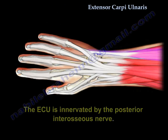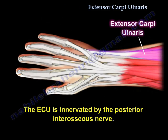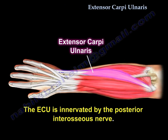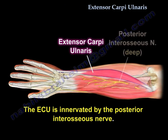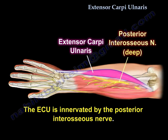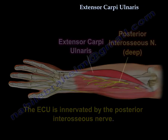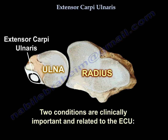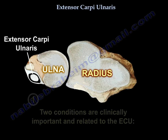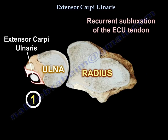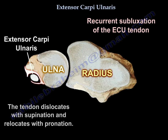The nerve supply is the posterior interosseous nerve. Two conditions are clinically important and related to the extensor carpi ulnaris. One is recurrent subluxation of the extensor carpi ulnaris tendon.